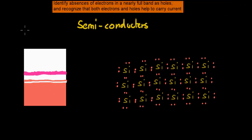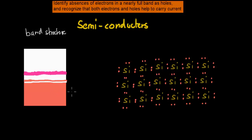We had this band structure before in the last couple of videos already. This was the band structure for a semiconductor. For the band structure of a semiconductor at room temperature, what we tend to find is that most of the electrons are in the valence band. We say that the valence band is partially filled, or almost full.